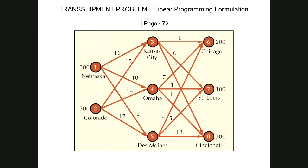By a similar token, how many constraints will we have? We're going to have eight constraints plus non-negativity: two constraints associated with our origins, three constraints associated with our transshipment points, and three associated with our destinations — eight different constraints in total.